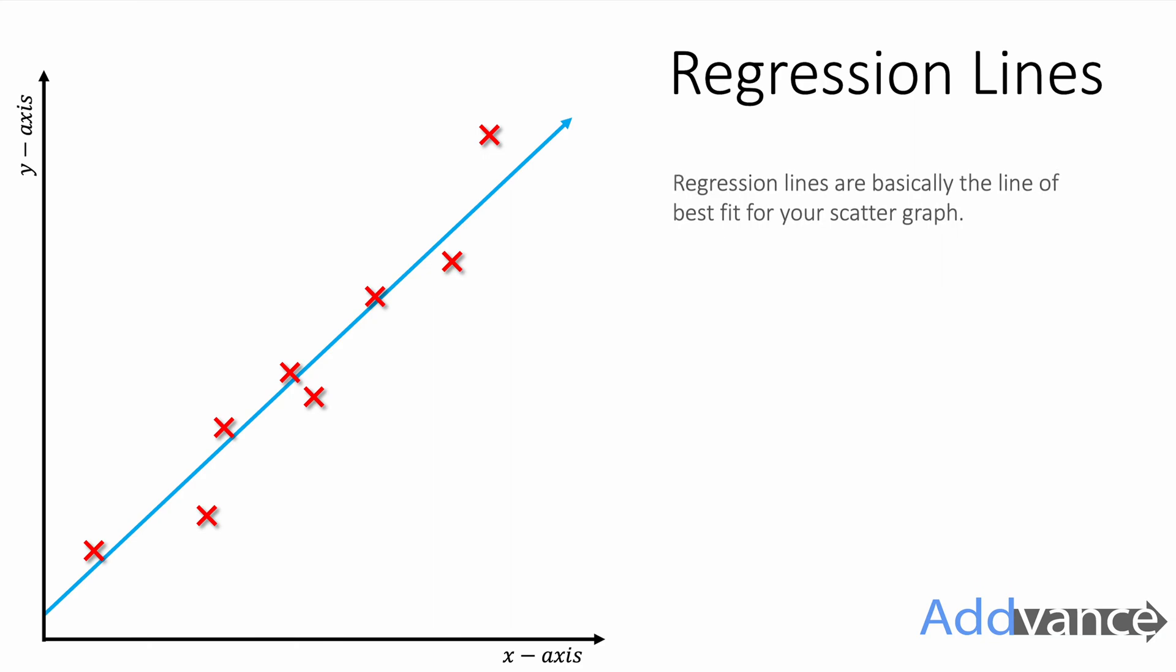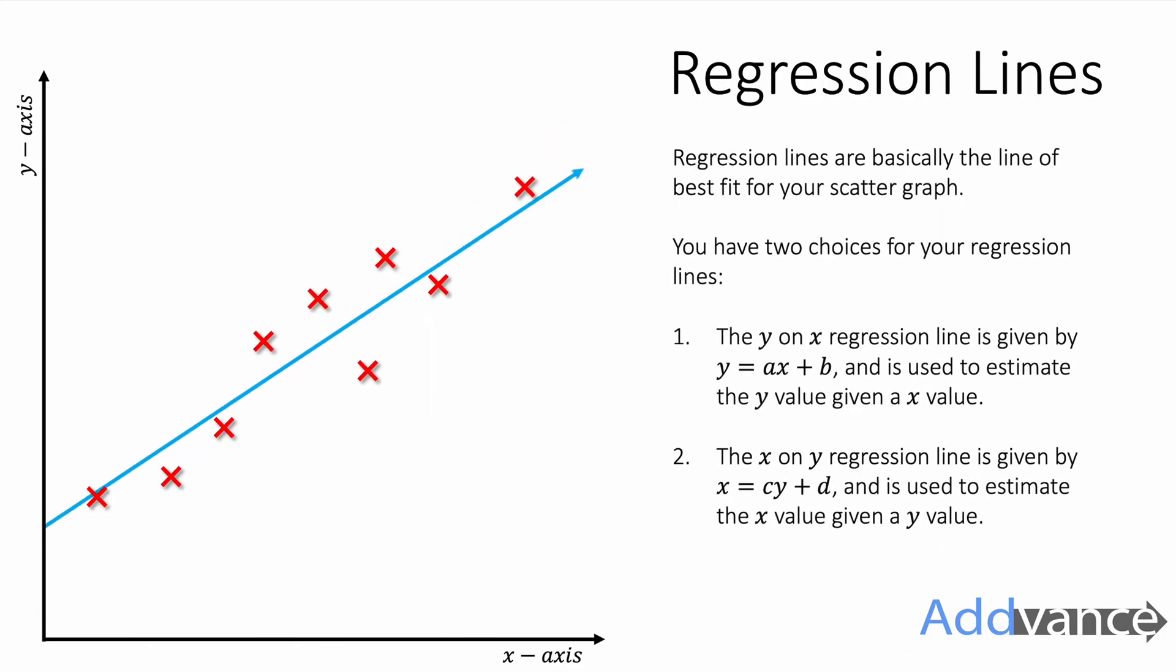So a regression line is basically a line of best fit for your scatter graph. And when you have a scatter graph you've got two different choices for a regression line.